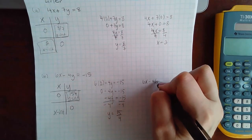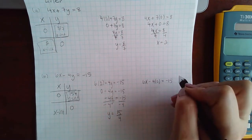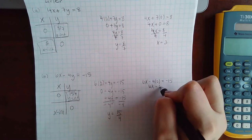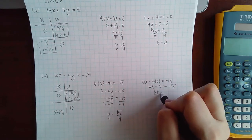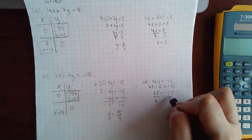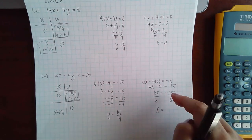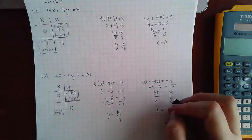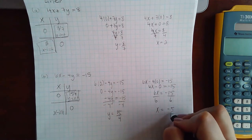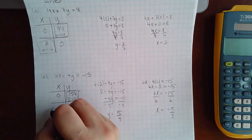If I plug in zero for y, I get six x minus zero, which is just six x. And if I divide by six, if you type this in your calculator or you reduce it in your head, you'll get negative five over three.